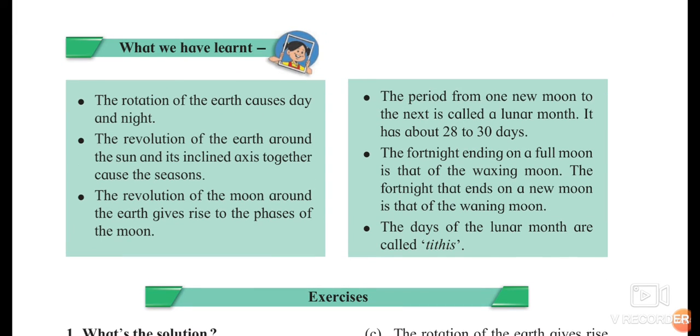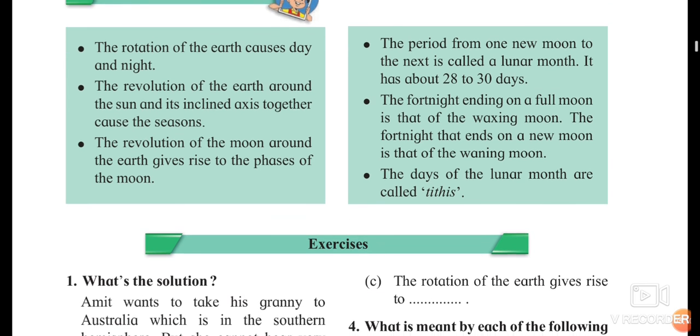The period from one new moon to the next is called the lunar month. From one full moon to another full moon, or one new moon to another new moon, it is a period of 28 to 30 days and it is called the lunar month. The days of the lunar month are called tithi.